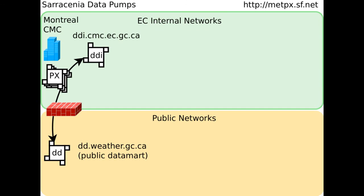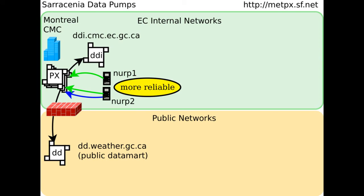Does Saracenia actually work today? This is part of the data switching network for Environment Canada. Our existing central data pumps, or product exchangers, use the older stack, and while it is a bit more complicated, it does let us try out bits of Saracenia. In this hybrid environment, we have demonstrated the dual server reliability strategy with the National Unified Radar Processing servers. Two servers run independently, and the first product available is pulled into the pumps for distribution. This is much simpler to run than high availability strategies with shared disk, and has resulted in a drop in the rate of calls for NURP availability issues from once or twice a month to zero.